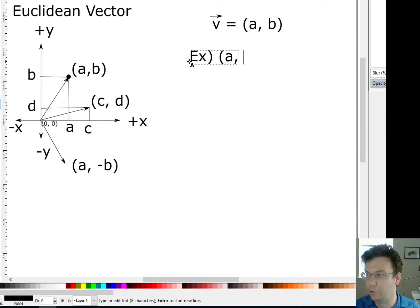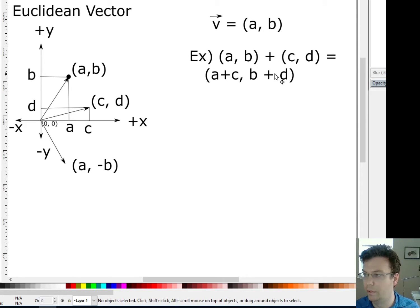So we've got our example here. We say vector (a, b) plus the vector (c, d). So algebraically, this is just going to be (a+c, b+d). So you add the x components, and then you add the y components.